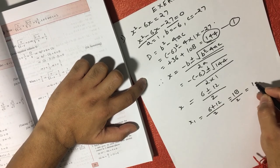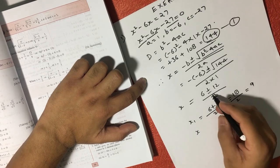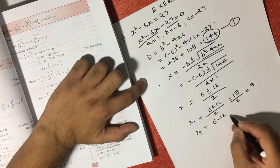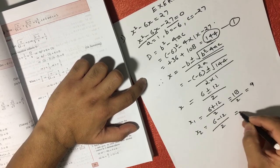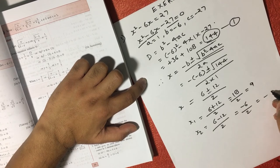so 1 value is coming as 9. And if we consider the negative part, then x2 is equal to 6 minus 12 oblique 2, so that will become minus 6 oblique 2 is equal to minus 3.